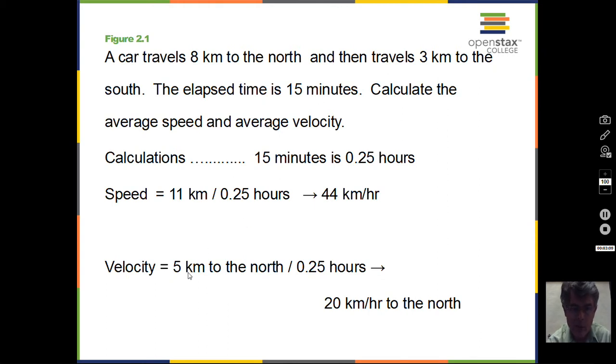The velocity, five kilometers to the north, is the displacement. Remember, eight kilometers to the north, and then we come back three kilometers to the south. The displacement is five kilometers to the north. The car is five kilometers north of its starting position. And this happens in 0.25 hours, so we get 20 kilometers per hour to the north with the velocity.